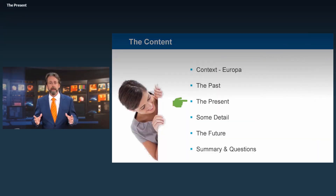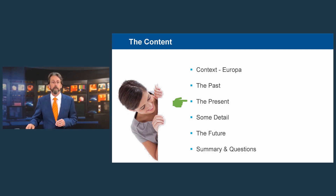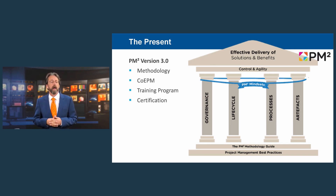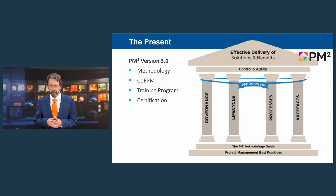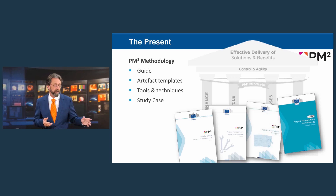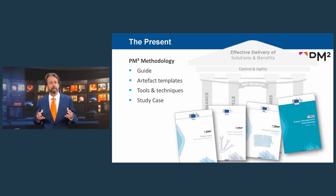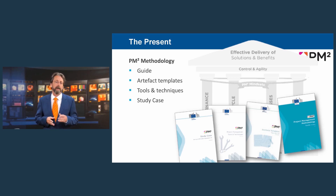That brings us to the present of PM2 and OpenPM2. PM2 version 3.0 is supported by a strong, well-described methodology, a lively active community of experts, and a well-defined, solid training program that caters to a lot of needs, plus a certification process. The methodology is described in the guide, but there are also artifact templates describing the management products you need to control and manage your projects throughout the lifecycle, descriptions of relevant tools and techniques, and versions available for agile projects and portfolio management.